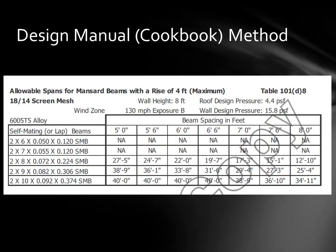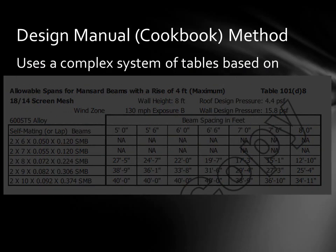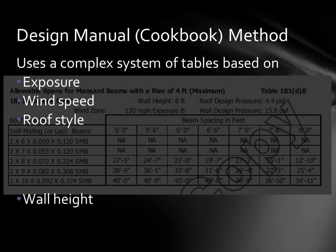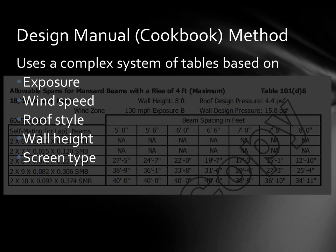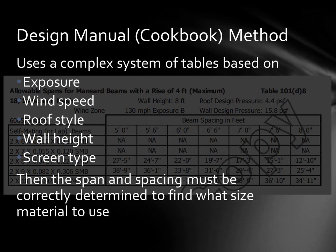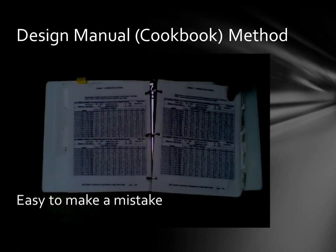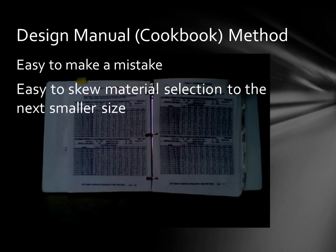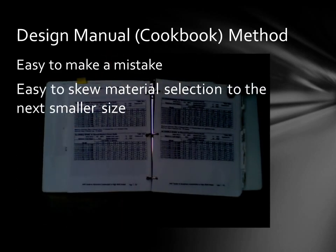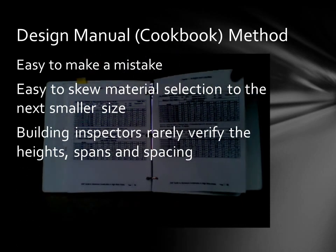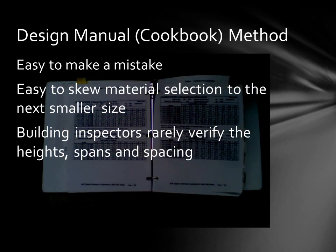These design manuals use a complex system of tables based on several factors: exposure, wind speed, roof style, wall height, and screen type. Once all these are known, the appropriate table can be found, and then the span and spacing must be correctly determined to find out what size material is to be used in the frame. Design manuals have hundreds of these tables, and it's easy to make a mistake. It's also easy to skew the material selection to the next smaller size, and since building inspectors rarely verify the heights, spans, and spacing, this can go unchecked.